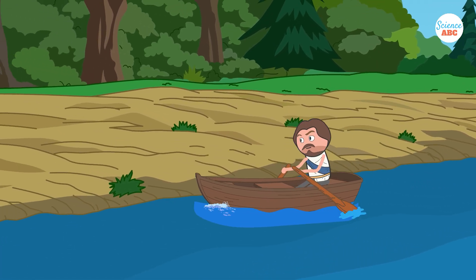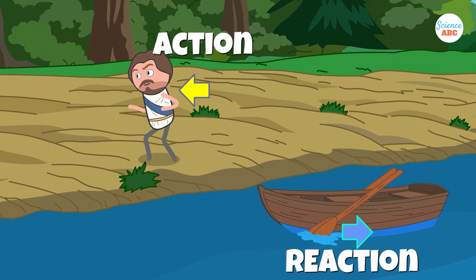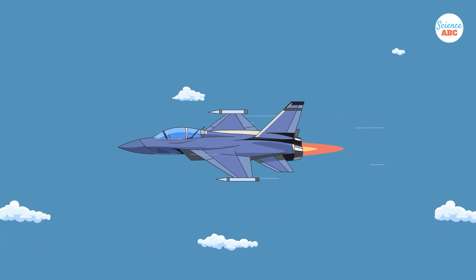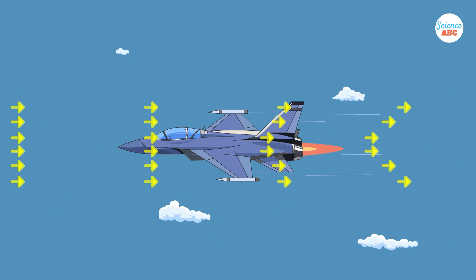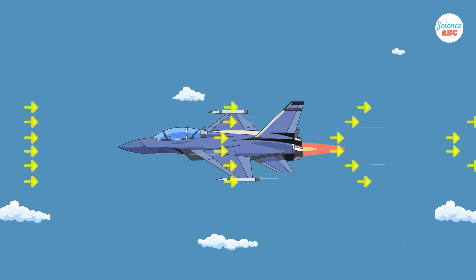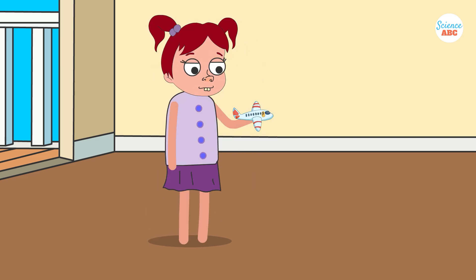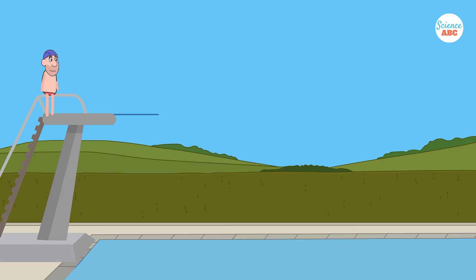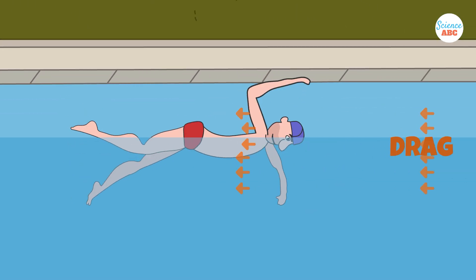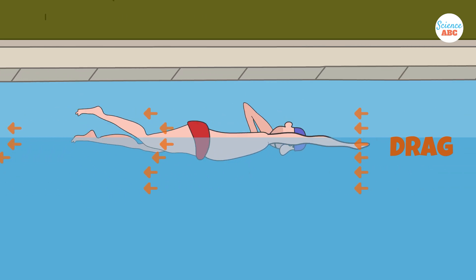You may recall Newton's third law of motion: for every action, there is an equal and opposite reaction. As an airplane flies, it pushes through the air, and in response, the air pushes back against the airplane. This aerodynamic force is known as drag, and its direction is always opposite to the direction of the plane's motion. Imagine swimming in a pool — the faster you try to swim, the more the water resists your movement. This is another example of drag in action.